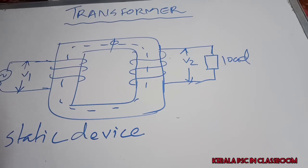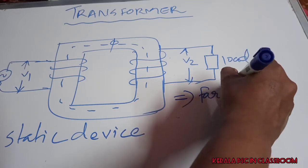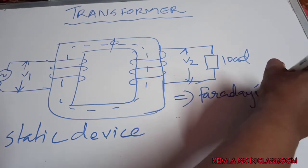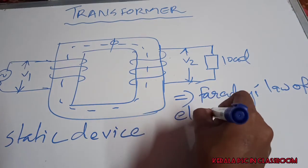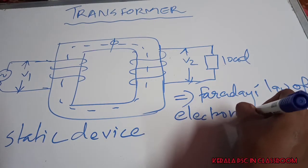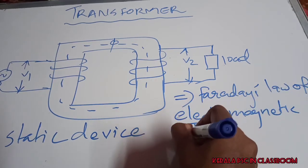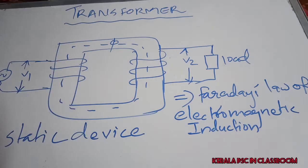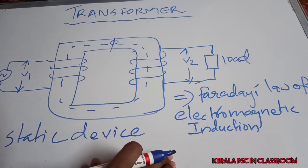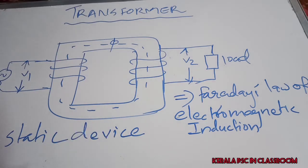The operating principle of a transformer is Faraday's Law of Electromagnetic Induction. A transformer has a primary winding and a secondary winding, and it works based on Faraday's Law of Electromagnetic Induction.